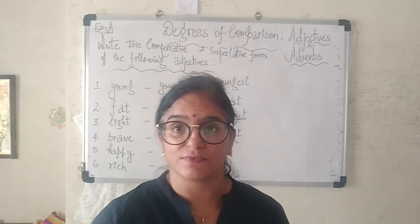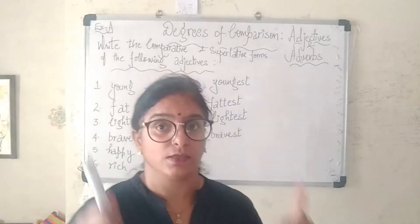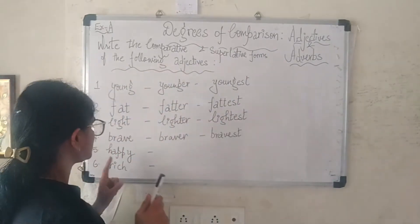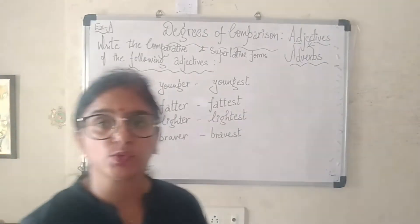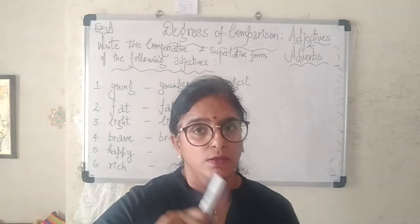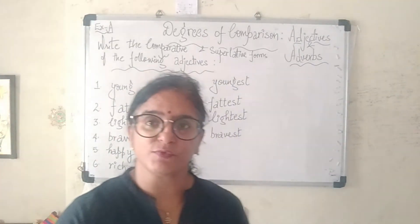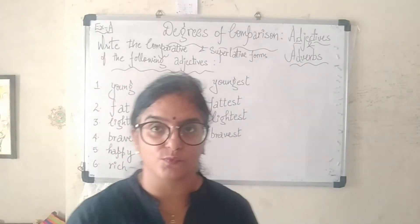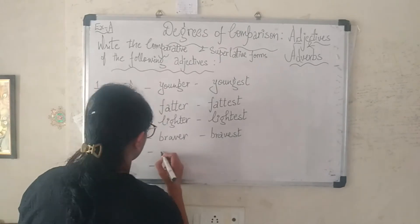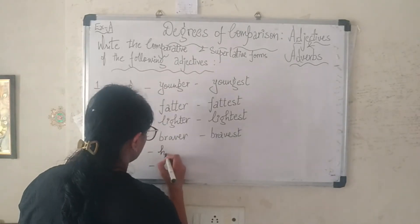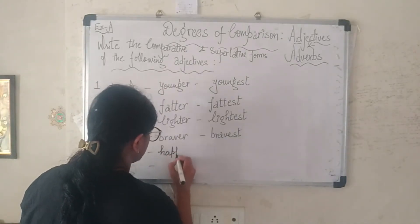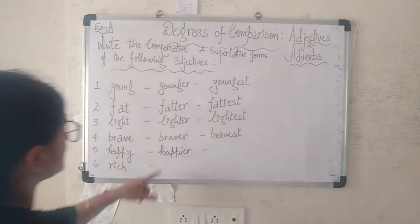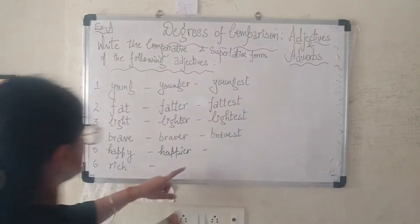The next adjective is 'happy'. The word ends in 'y', so you remove the 'y' and write 'i-e-r' in its place to make the comparative form. So the answer is 'happier', and the superlative form is 'happiest'.